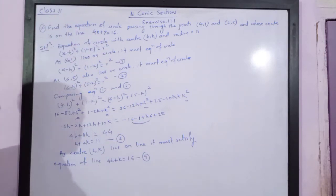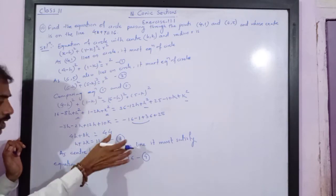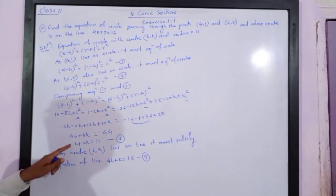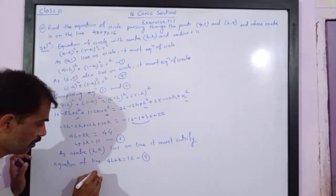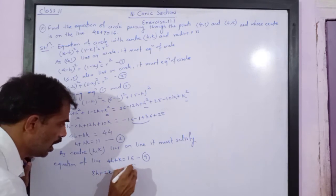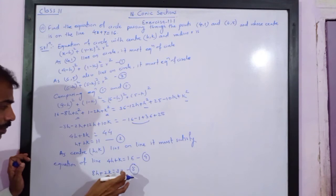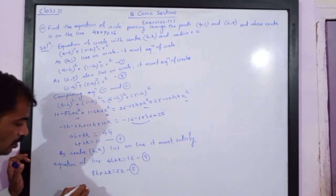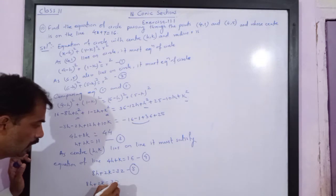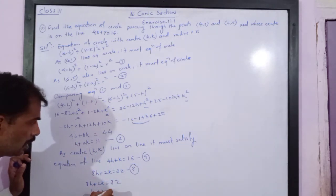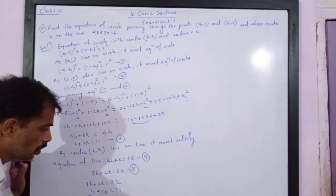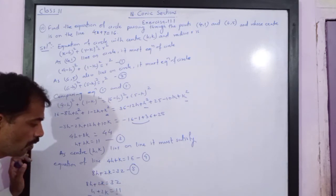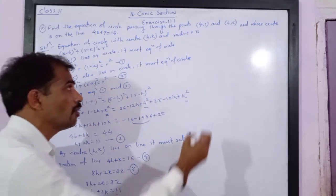Now let us solve equations 3 and 4. To eliminate k, I multiply equation 4 by 2: 8h + 2k = 32. This is equation 5. Subtracting equation 3 from equation 5: (8h + 2k) − (h + 2k) = 32 − 11, giving 7h = 21, so h = 3.